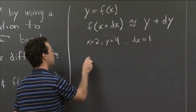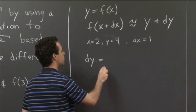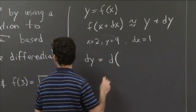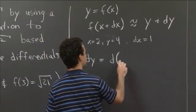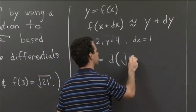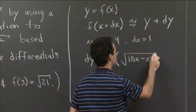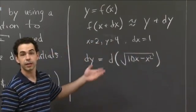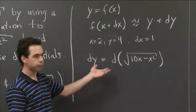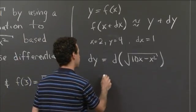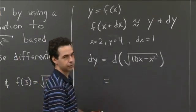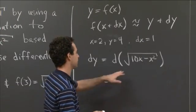To compute dy, well, dy is the differential of the function. So this is d(√(10x - x²)). To compute this differential now, we just use our straightforward rules for doing this, so we take a derivative and then we have dx's where necessary.